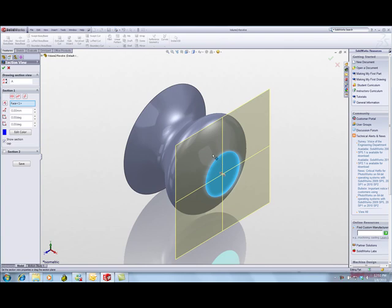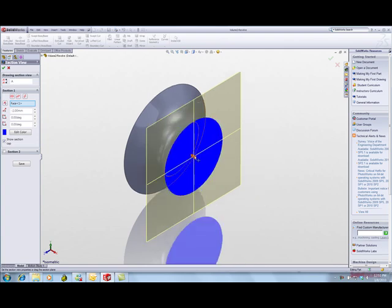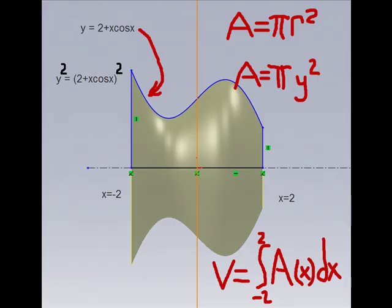In this revolve solid, as I take my section plane and cut through the solid, every cross section is a circle, but that circle radius varies as a function of x.